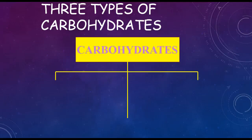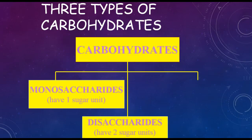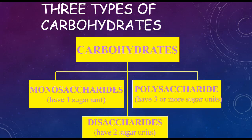There are three types of carbohydrates. There are monosaccharides, which have one sugar unit, disaccharides, which consist of two sugar units, and polysaccharides, which have three or more sugar units.